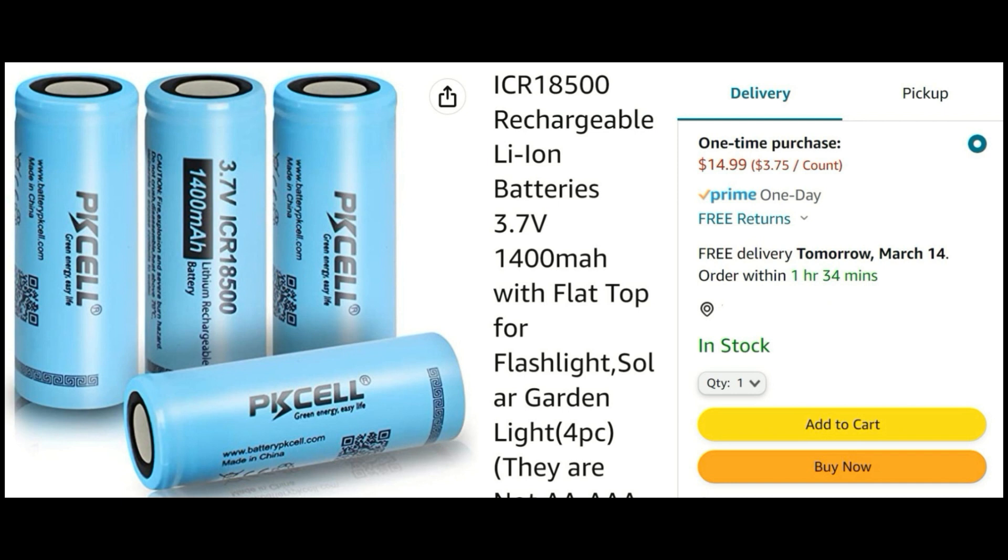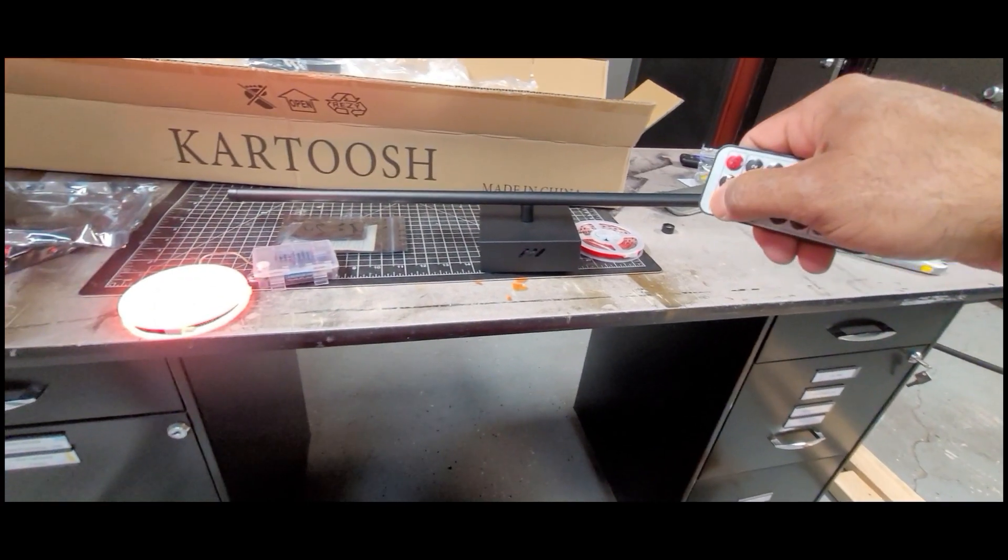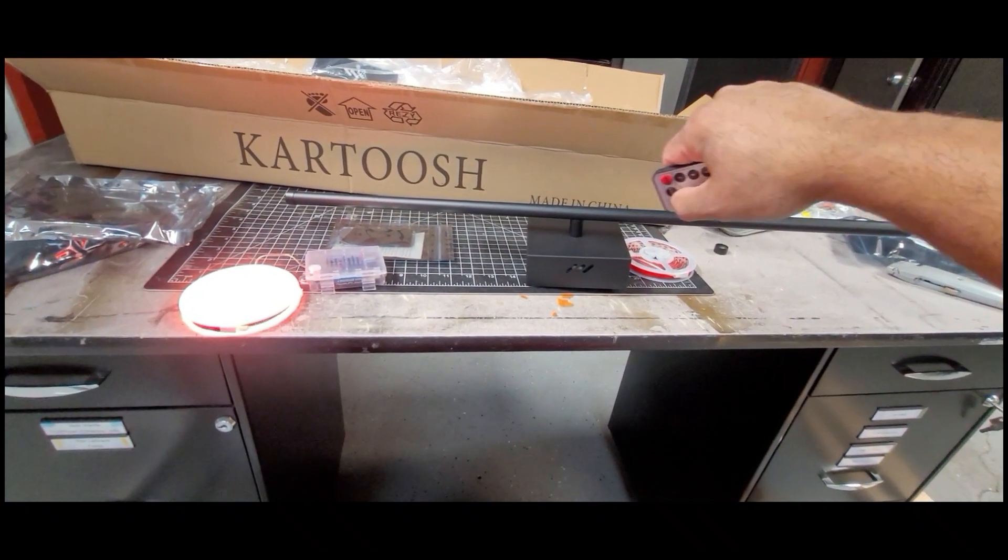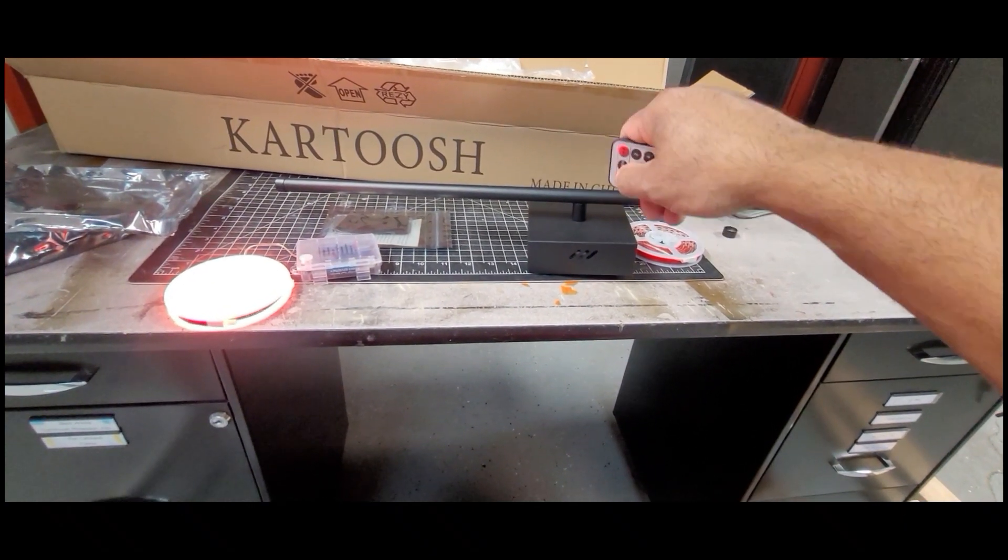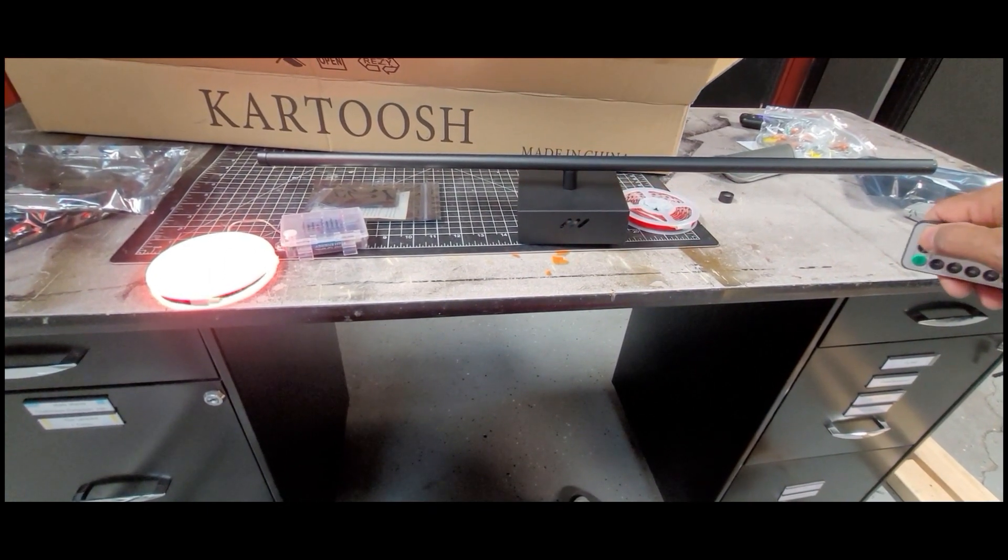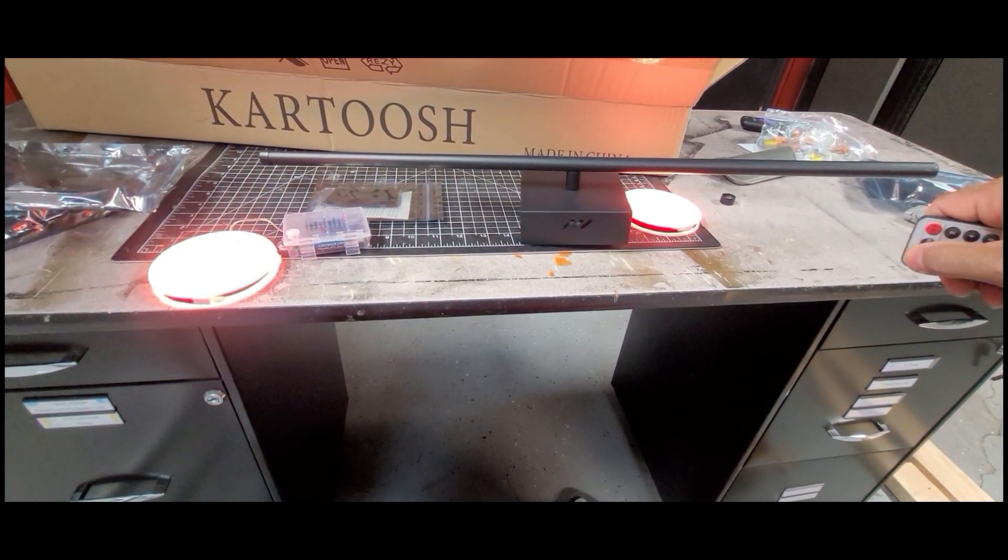All right, enough of this, let's get to the build. First I make sure the light works, then test the remote by placing the battery box that has the infrared sensor under the light fixture. It's not the best but it still works.